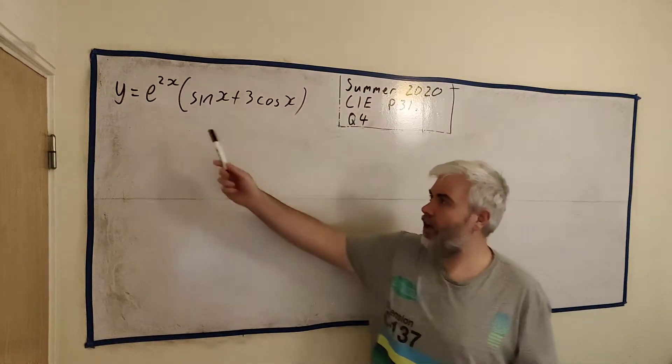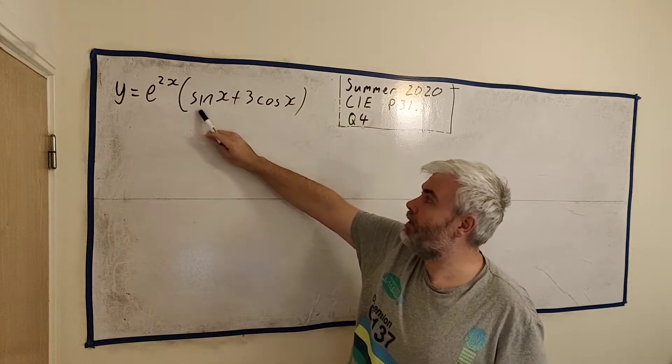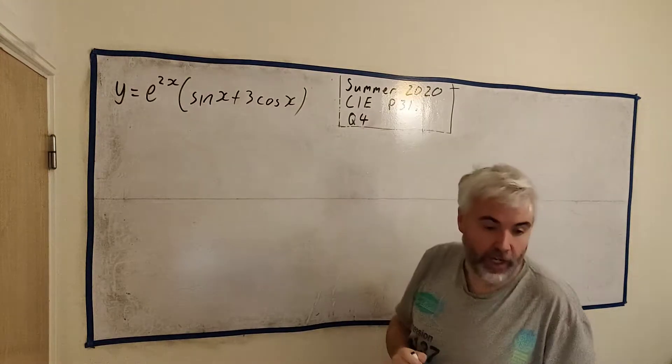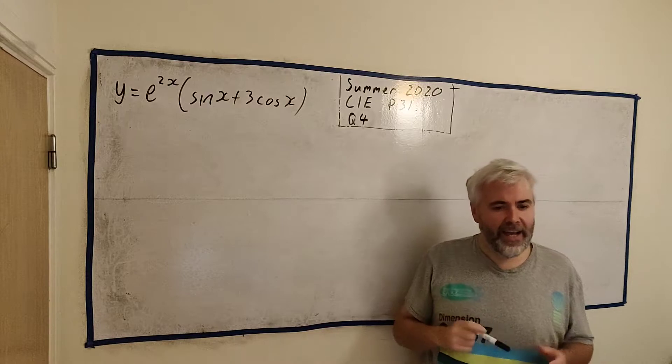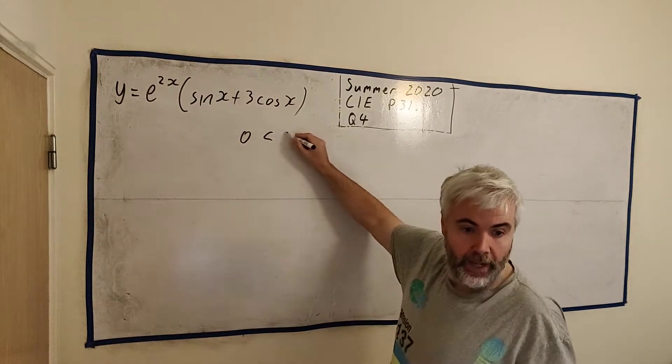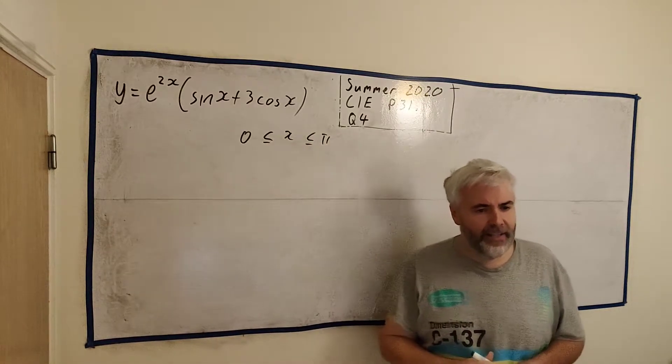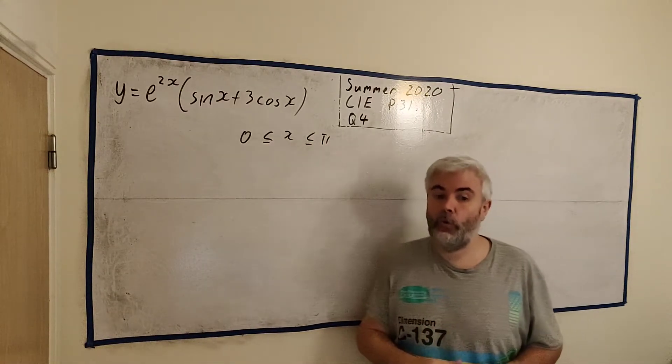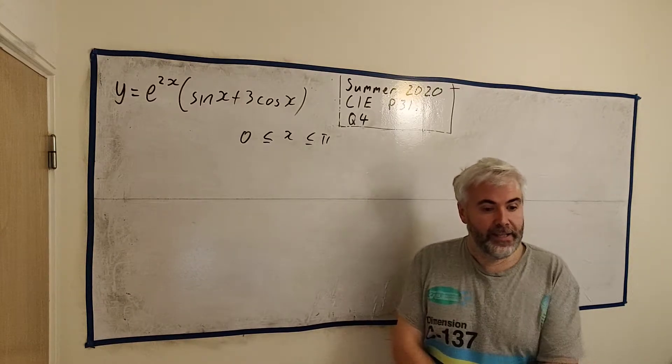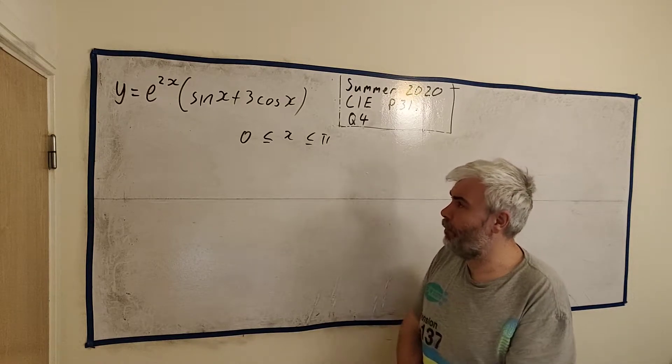In this question they give us a curve here: y equals e to the power of 2x all multiplied by sine x plus 3 cosine x. And they tell us it has a stationary point between 0 and pi. They'd like us to find the x coordinate of that stationary point, and then they'd like for us to tell them whether it's a maximum or a minimum.